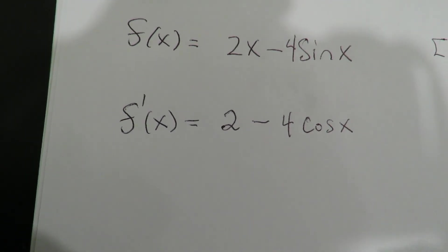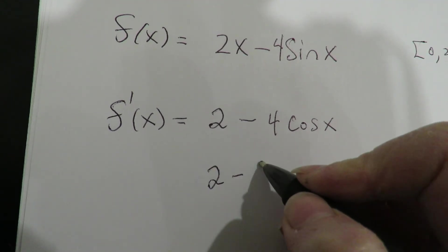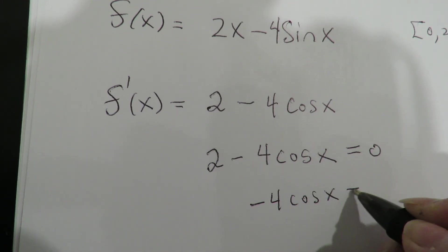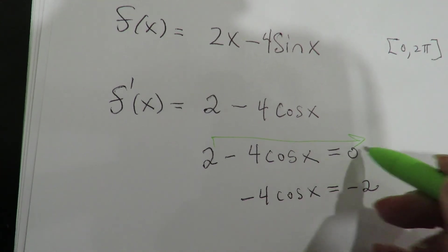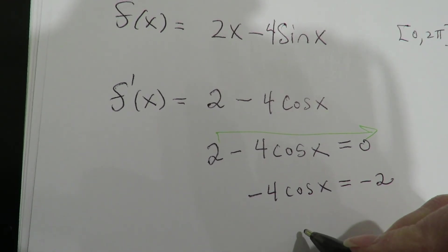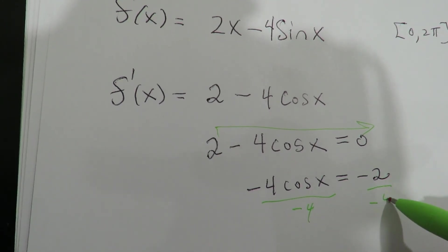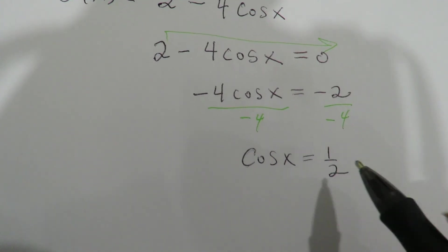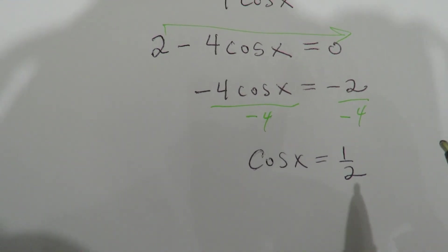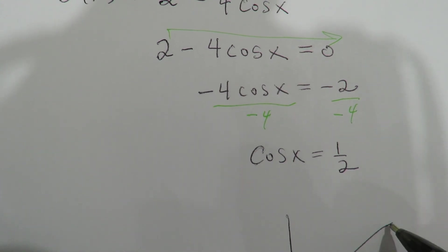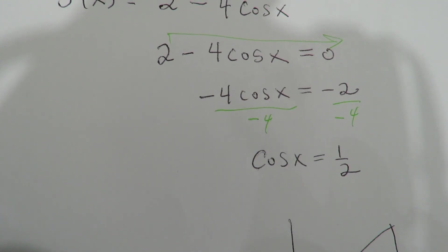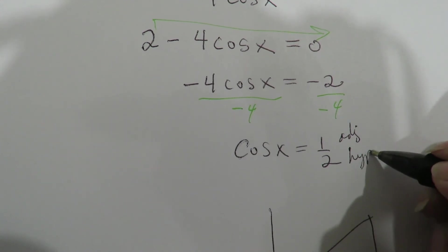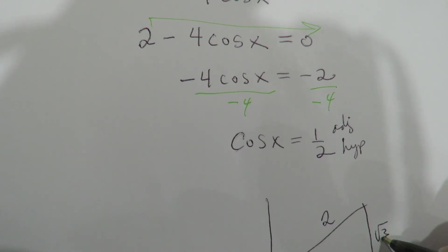So there's the derivative, and now I'm going to solve for the critical numbers, so I'm going to set this equal to 0. I'm moving the 2 to the other side. I'm dividing by negative 4. Alright, so the critical number is going to occur where the cosine of x equals a half.